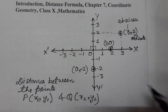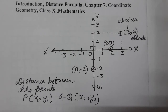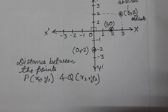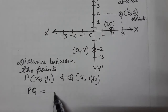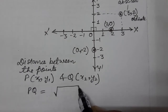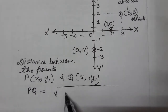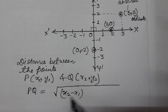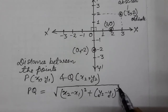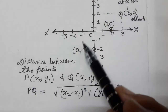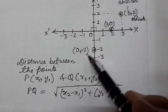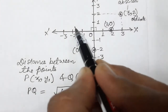If we have two points and we need to find the distance between them, the formula is: under root of (x2 minus x1) whole square plus (y2 minus y1) whole square. This is the distance formula. For any two points in the Cartesian coordinate system, if we need to find the distance, we can easily do so using this formula.